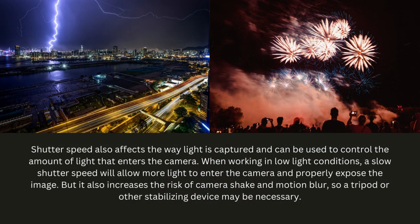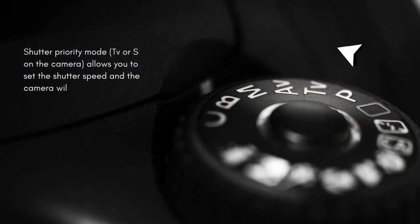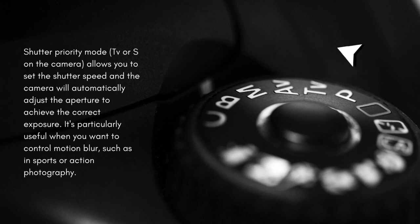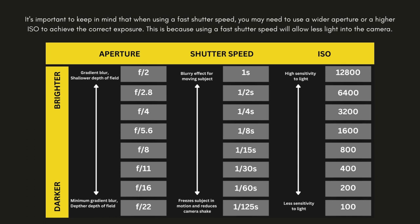Shutter speed also affects how light is captured and can be used to control the amount of light entering the camera. In low-light conditions, a slow shutter speed allows more light to enter and properly expose the image, but increases the risk of camera shake and motion blur, so a tripod may be necessary. Shutter priority mode (Tv or S on the camera) lets you set the shutter speed while the camera automatically adjusts the aperture for correct exposure — particularly useful when controlling motion blur in sports or action photography. When using a fast shutter speed, you may need a wider aperture or higher ISO to achieve correct exposure.